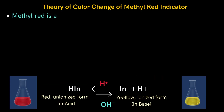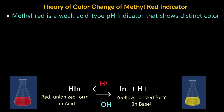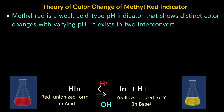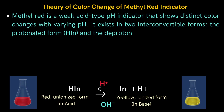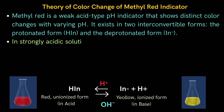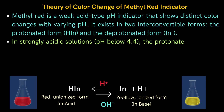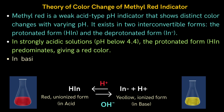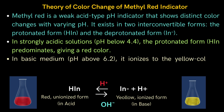Here we understand the theory of color change of methyl red indicator. Methyl red is a weak acid type pH indicator that shows distinct color changes with varying pH. It exists in two interconvertible forms: the protonated form (HIn) and the deprotonated form (In⁻). In strongly acidic solutions, pH below 4.4, the protonated form predominates, giving a red color. In basic medium, pH above 6.2, it ionizes to the yellow-colored conjugate base In⁻.